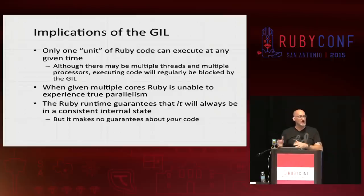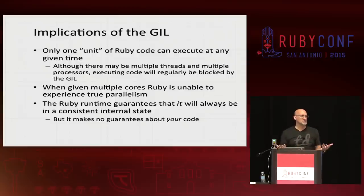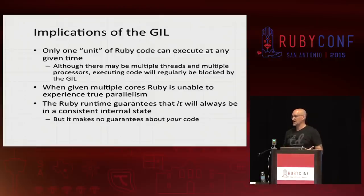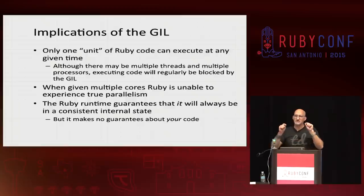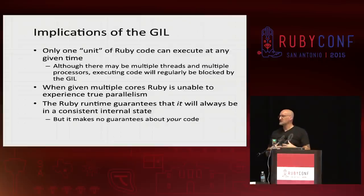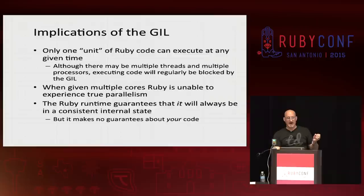What does that mean in highly simplified terms? The implication is: only one 'unit' of Ruby code can run at any given time. I put 'unit' in quotes because context switch boundaries can be complex — but one unit of pure Ruby code can execute at any given time. We may have multiple threads, multiple context switches, but only one has the lock. If a context switch occurs, the other thread says 'I can't do anything because I can't get the lock.' In effect, this means we don't get parallelism. But because of this, Ruby can guarantee that its internal state is always consistent and not corrupted. What Ruby does not do — what the GIL does not do — is provide us guarantees about our code.